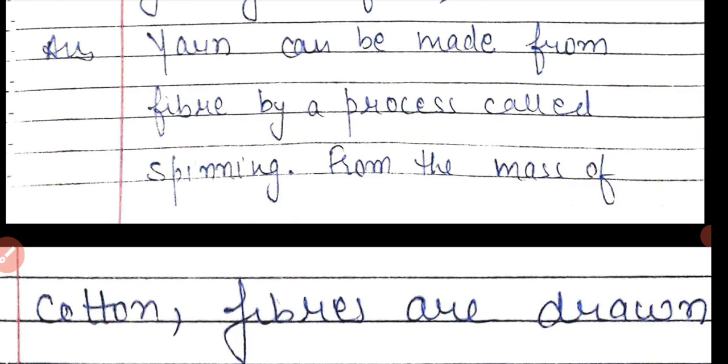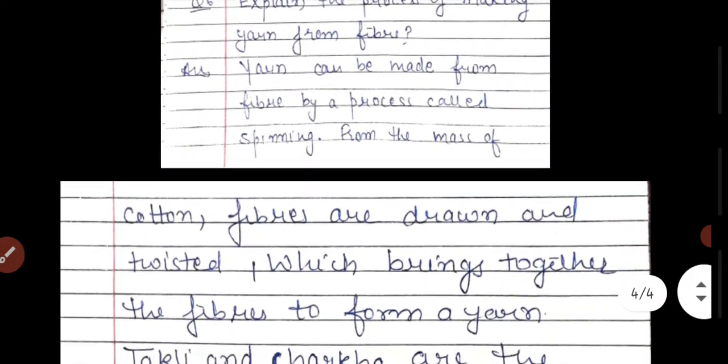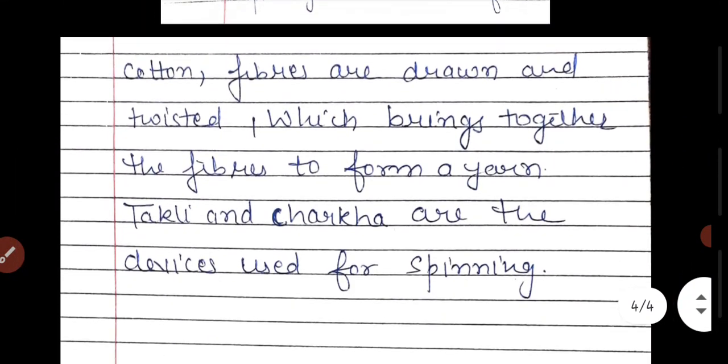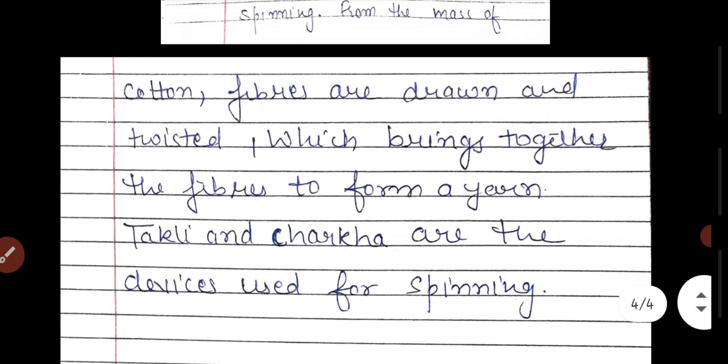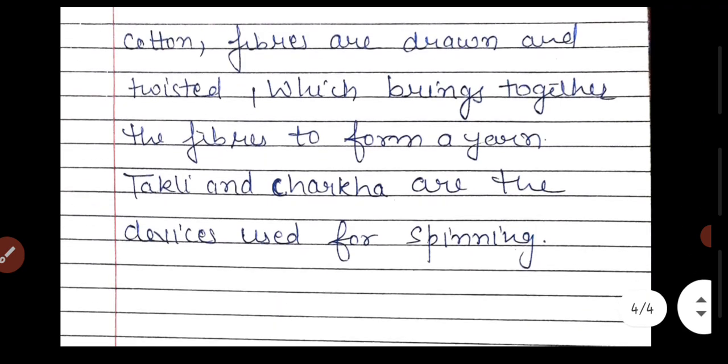In the spinning process, the mass of cotton fibers is drawn and twisted, which brings the fibers together to form a yarn. We need to take cotton, twist it, and then we get yarn.